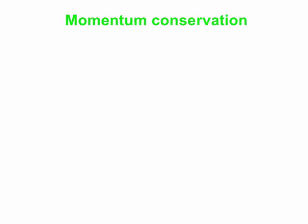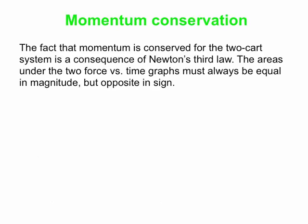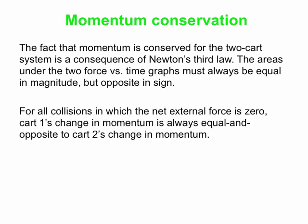Momentum conservation is actually just a consequence of Newton's third law. Two colliding objects come together. Each one individually experiences a change in momentum, but the change in momentum are equal and opposite because of the fact that the force versus time graphs are mirror images of one another.